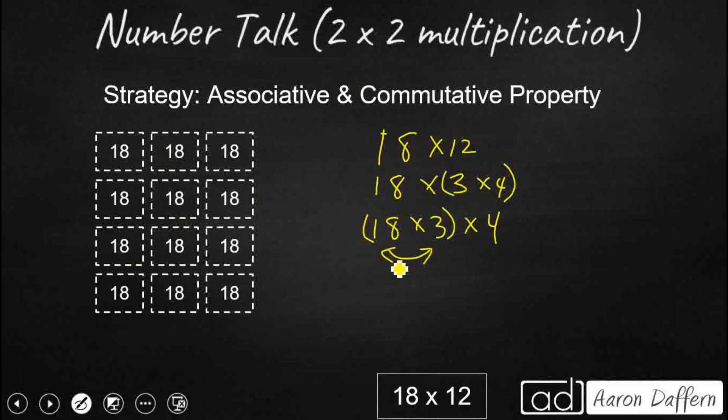And the reason I know I can do that is because of the commutative property. That is my order property that lets me just flip the order of any factors. 18 times 3, 3 times 18, same thing. So I've got three groups of 18 times 4. And really what I want to do is I want to use the commutative property again. I want to get it to look this way: four groups of three groups of 18. So here are my three groups of 18.